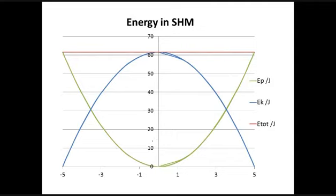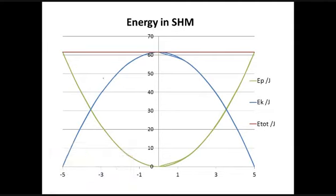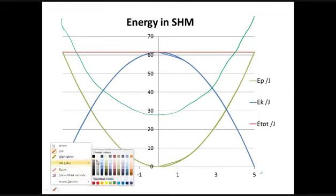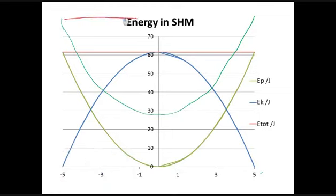A slight complication: for the mass-spring system, potential energy is not zero at the center — there is still some elastic potential energy there. So the potential energy curve has the same shape but doesn't touch the axis at the center. The kinetic energy still goes to zero at the ends. The total energy still forms a constant horizontal line — at any point, kinetic plus potential energy adds up to the same total across the entire graph.